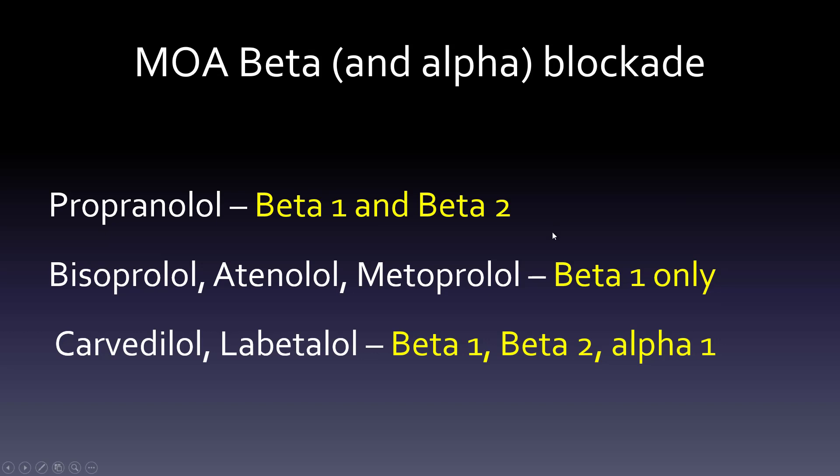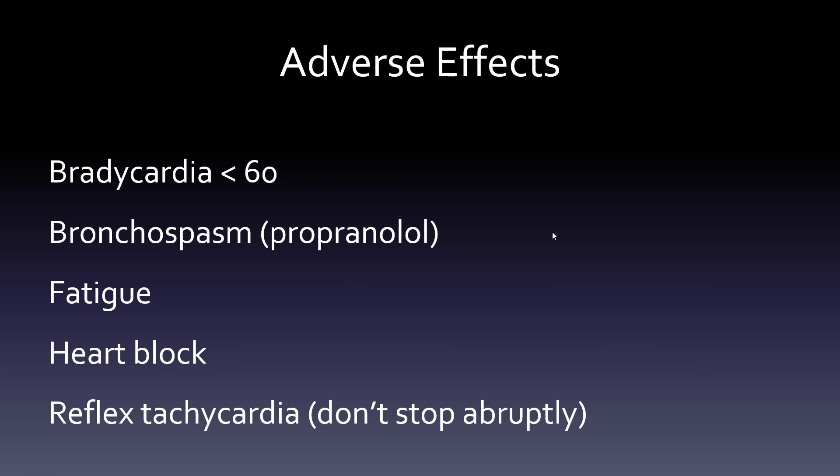Adverse effects tend to come from the mechanism of action. Bradycardia can be a problem — if the heart rate drops below 60, that's really a contraindication. Bronchospasm is a concern specifically with propranolol, where you're blocking the beta-2 receptor. Fatigue is a big deal because if you go on a run and your heart rate can't increase due to the medication, you'll get fatigued. Heart block can occur if the dose is too high. And reflex tachycardia can come from stopping the beta blocker abruptly — like pushing down on a spring and suddenly letting go.